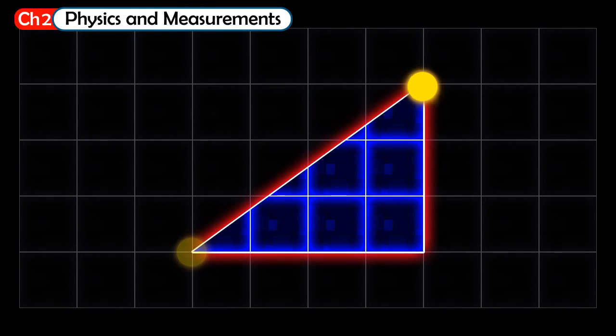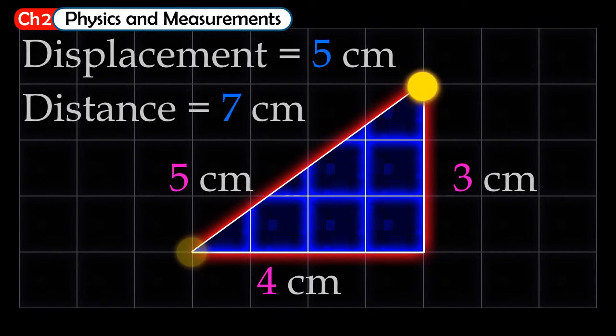The distance crossed by the object is 7 cm. As we said in a previous video, distance is the length of the path taken, but the displacement is 5 cm at an angle of 37 degrees. As we said in a previous video, displacement is a vector quantity and we must state the direction.